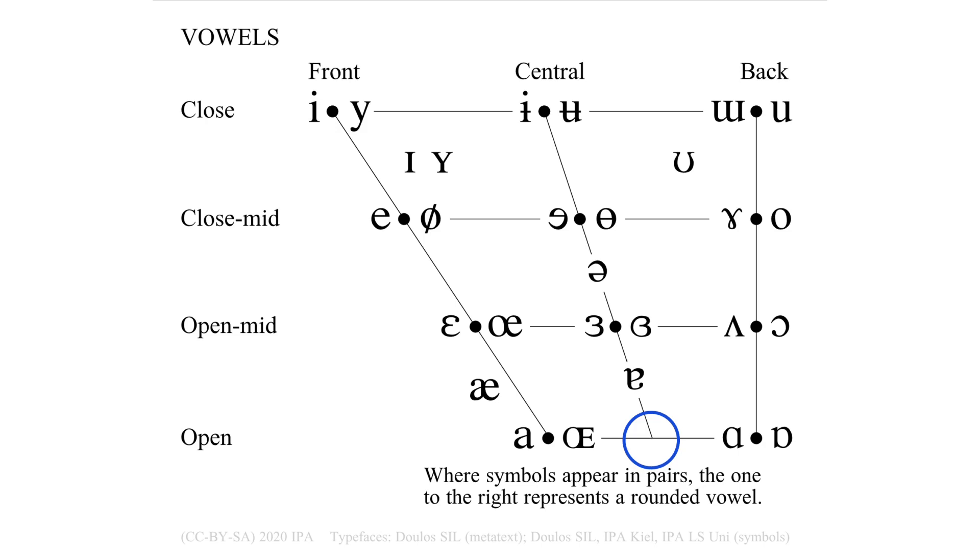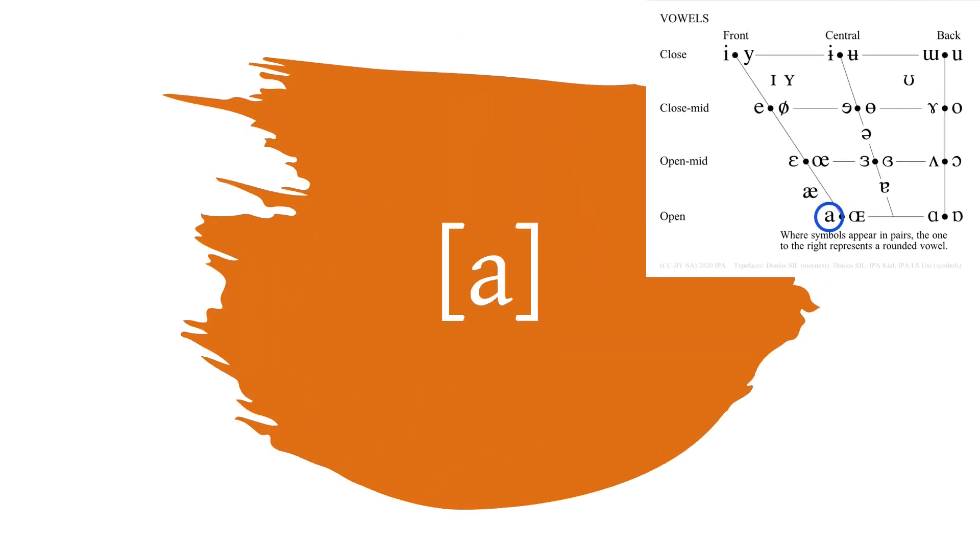Often, the character for the front vowel A is used to transcribe A, so it can be ambiguous if the indicated vowel is front or central.